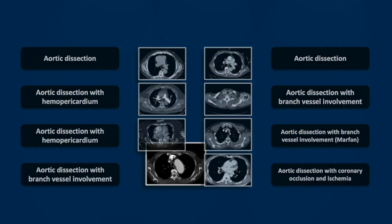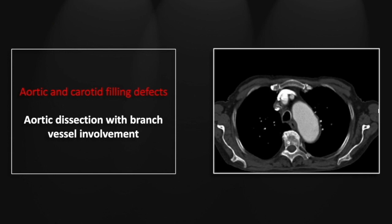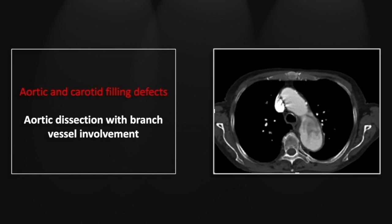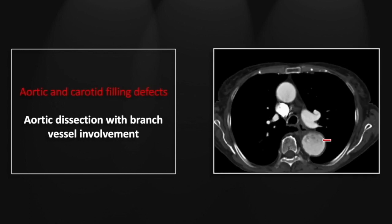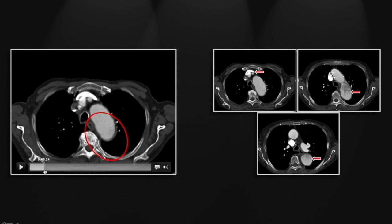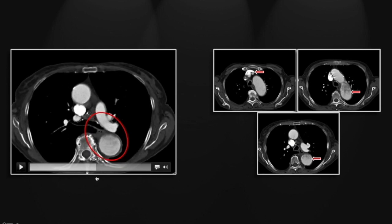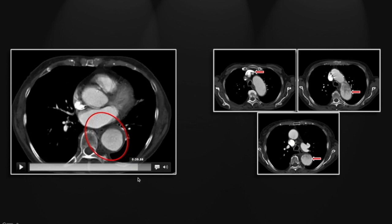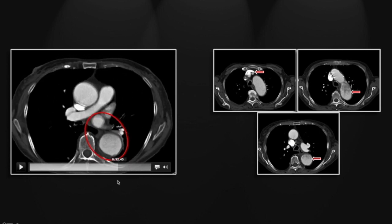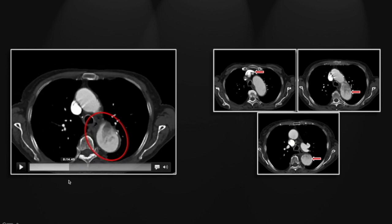Our next case is an aortic dissection with branch vessel involvement. You can see it at the base of the left common carotid artery. In the posterior aspect of the aortic arch there is a wispy filling defect representing a thin layer of displaced intima, and that extends into the descending thoracic aorta where you can see a tiny fleck of atherosclerotic calcification displaced in the lumen. This dynamic filling defect extends throughout the descending thoracic aorta with a swirling appearance as it moves with blood flow.